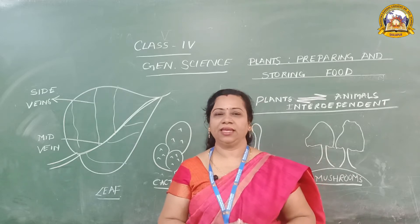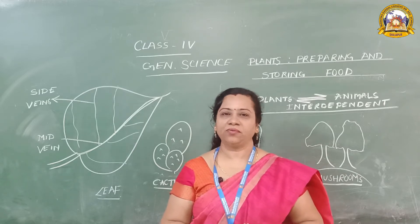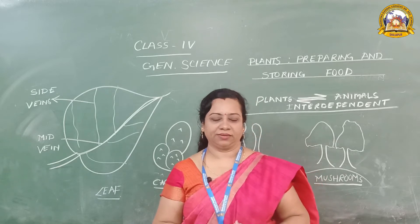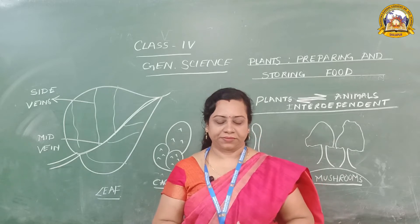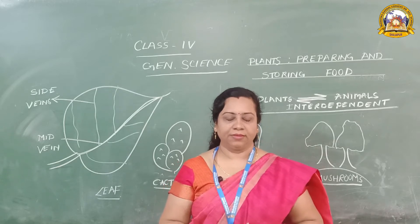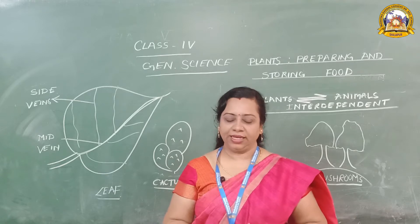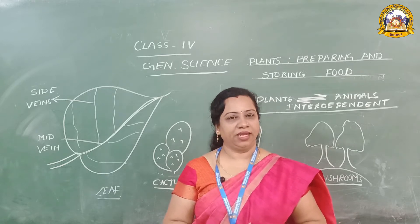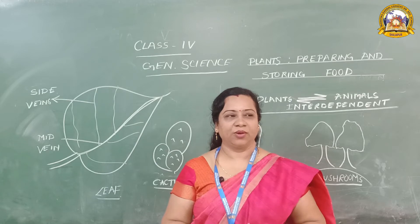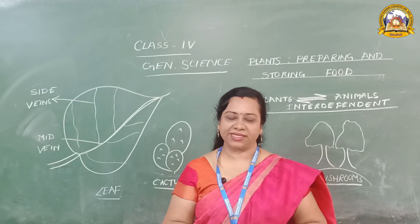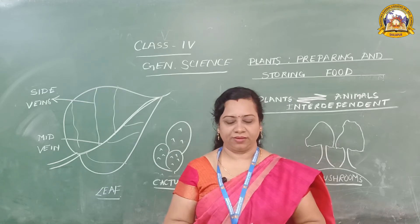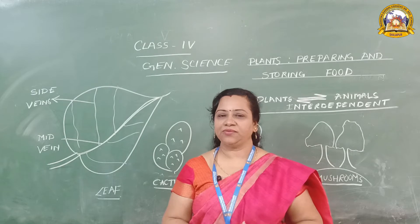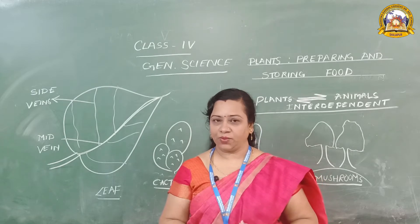Leaves are green in color because of the substance called chlorophyll present in them. Green leaves are green because chlorophyll is present there.